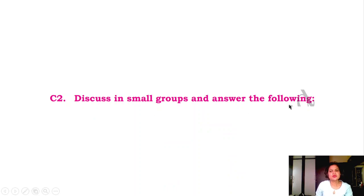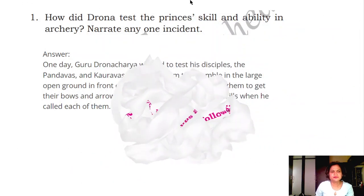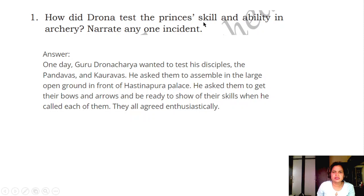C2: Discuss in small groups and answer the following. Question 1: How did Drona test the prince's skills and abilities in the archery? Narrate any one incident.